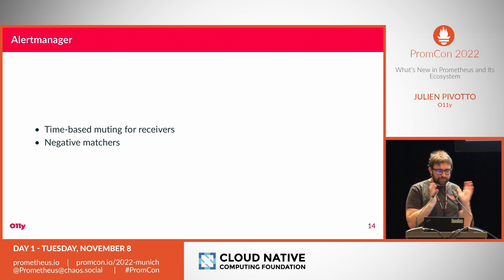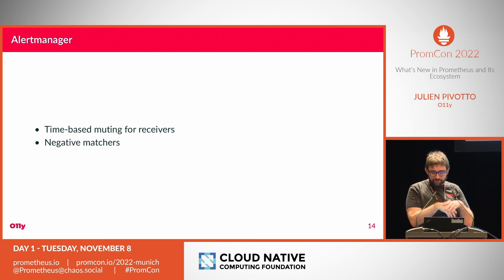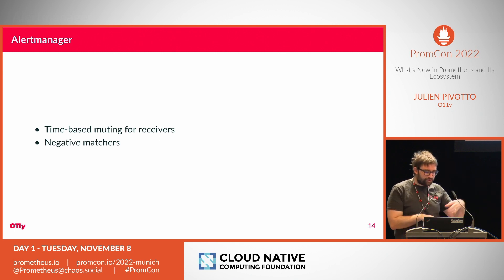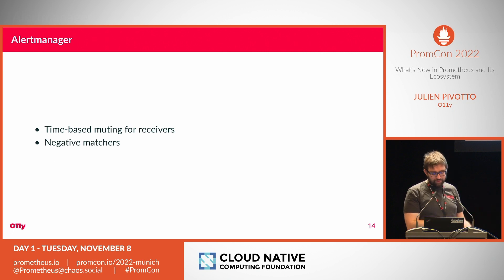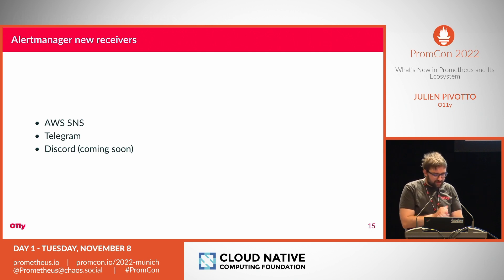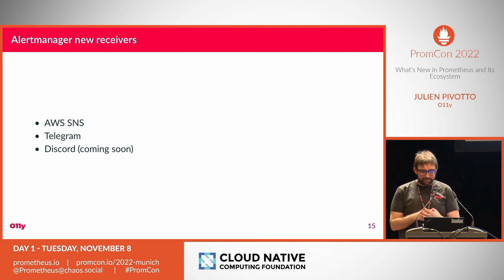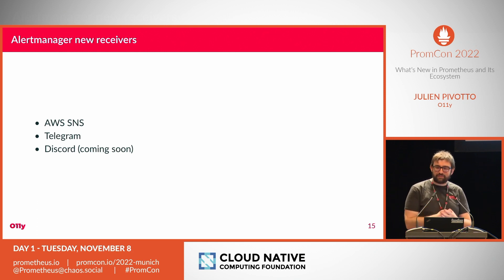For AlertManager: you can now configure time-based routing for receivers — for example, an on-call receiver that only gets alerts at night. There are also negative matchers, so instead of routing alerts based on a positive matcher you can say all alerts that are NOT production should go to a certain receiver. More excitingly, we have added new receivers: AWS SNS and Telegram. Discord is coming very soon — the code is already in main and Simon will cut a release shortly.